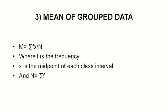For Case 3, mean of grouped data. Here also, mean is calculated by the formula: mean = sigma fx / N, where f is the frequency, x is the midpoint of each class interval, and N = sigma f. Consider the data given in tabular form with class intervals and number of students.